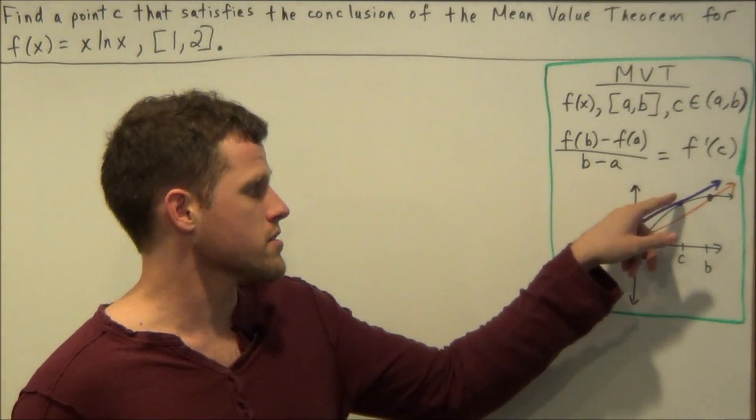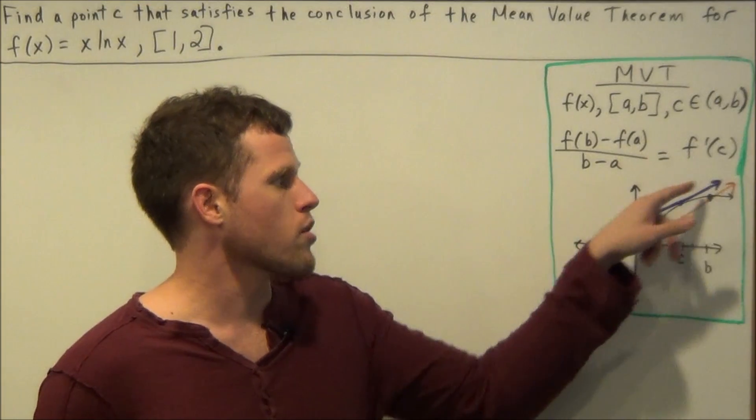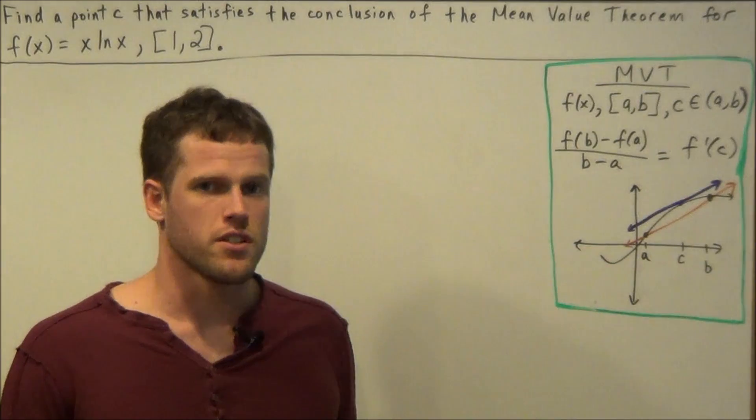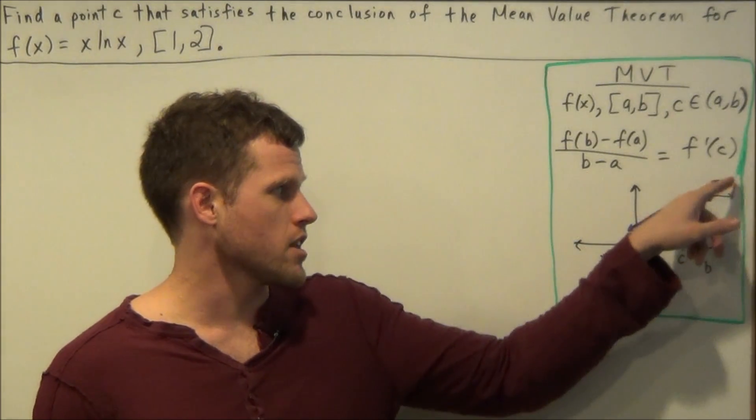At some point C, the instantaneous rate of change, which represents the slope of this tangent line here in purple, has to be equal to the average rate of change, which is the slope of our secant line here in orange.